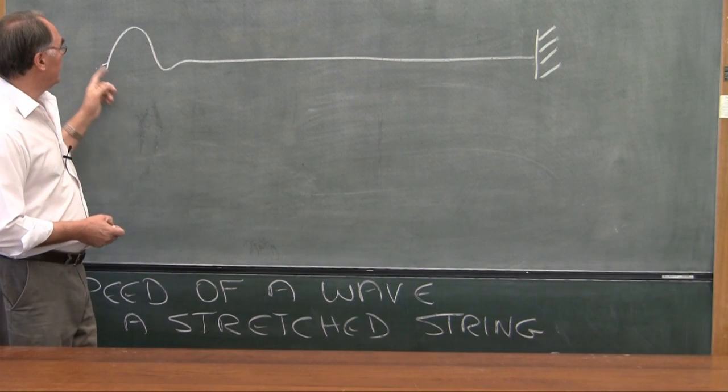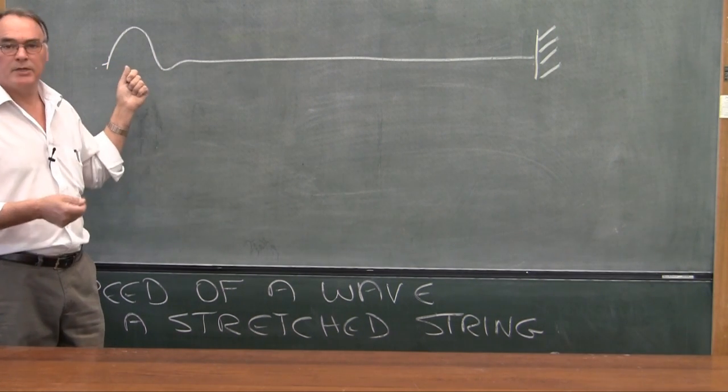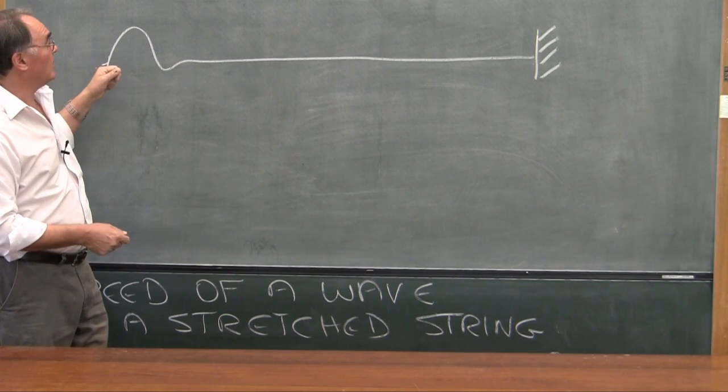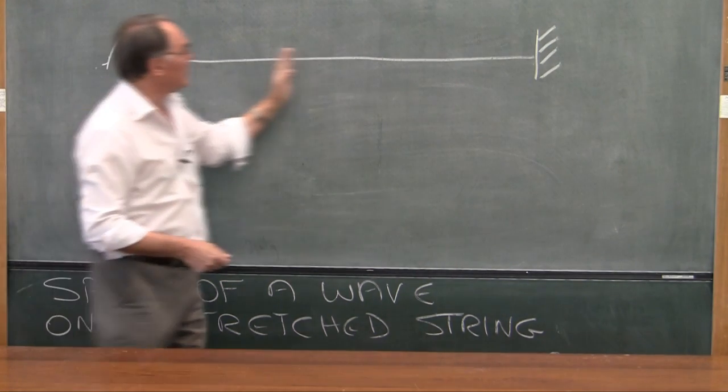I'm sure you're all familiar with the idea that if I have a length of string under tension, fixed at one end, and I put a pulse on the string, then the pulse will run down the string, get to the boundary point, and run back again.